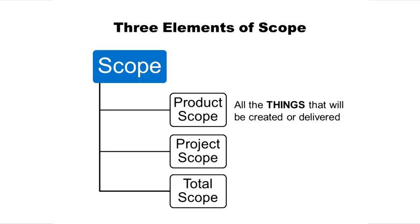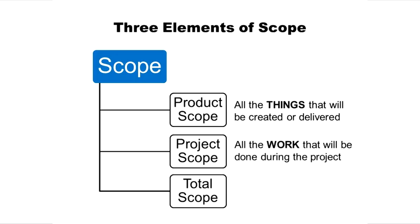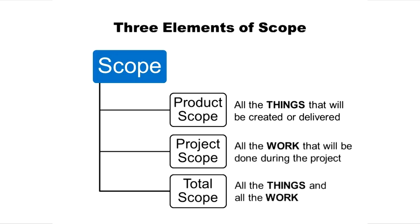The product scope is all the things that will be created and provided by this project. Once we figure out all the things we're going to create, we do a project scope, which is all the work we have to do to create those things. When we put both together — all the things we're going to create and all the work to make that happen — we have the total scope of the project.